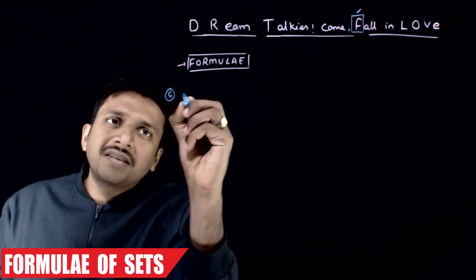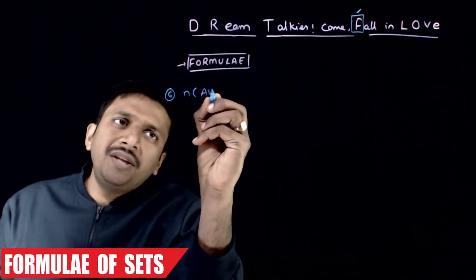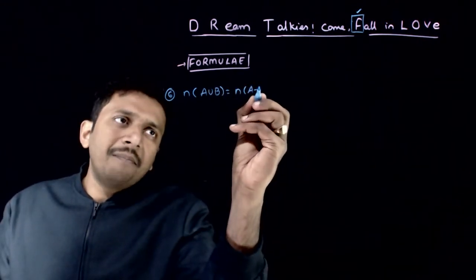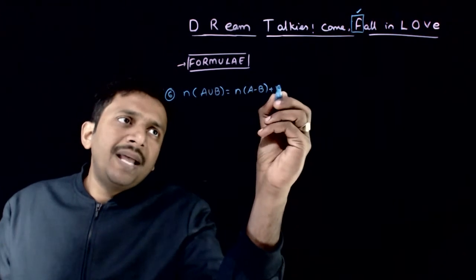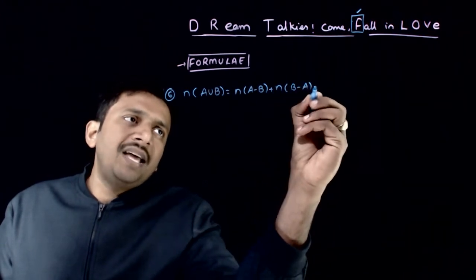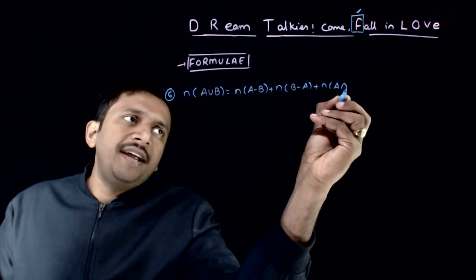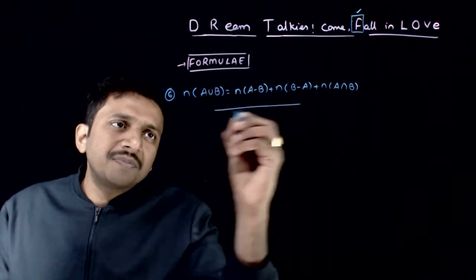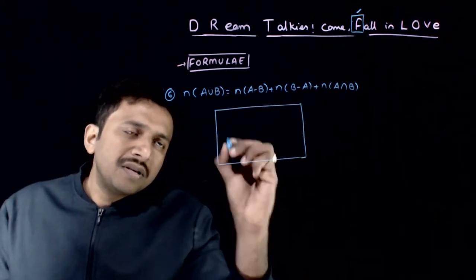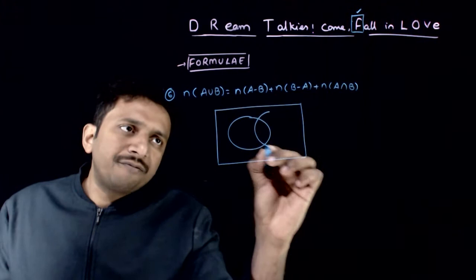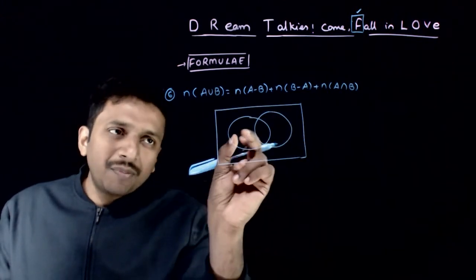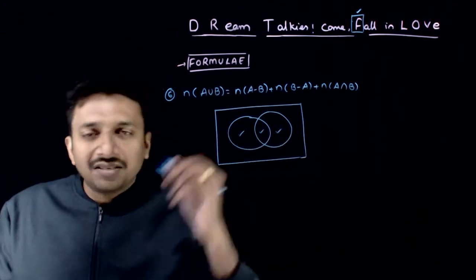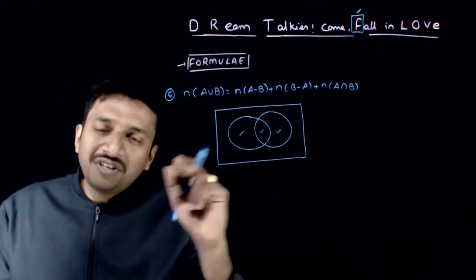The next auxiliary formula is N of A union B, which can also be written as N of A minus B plus N of B minus A plus N of A intersection B. If you want N of A union B, that means you are talking about the elements present in three regions. These are the three regions which need to be considered.